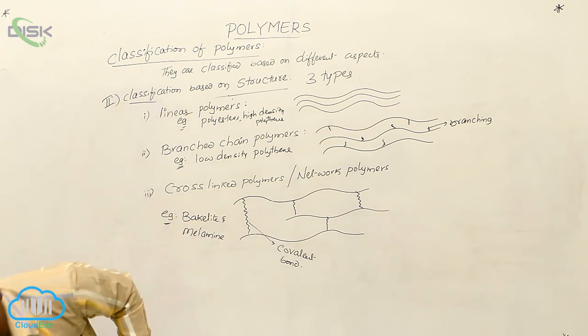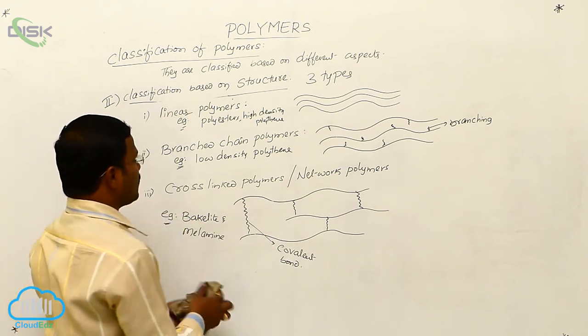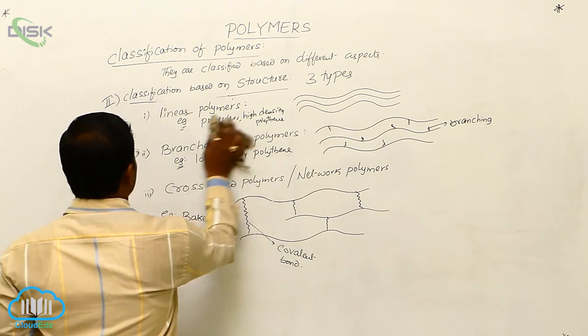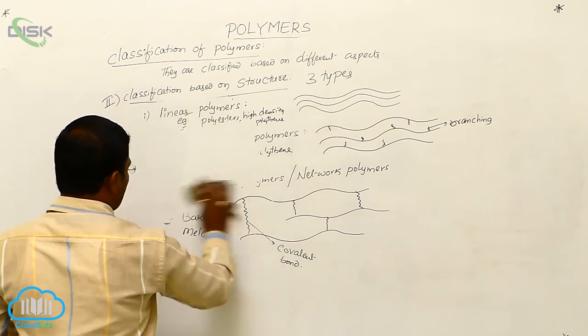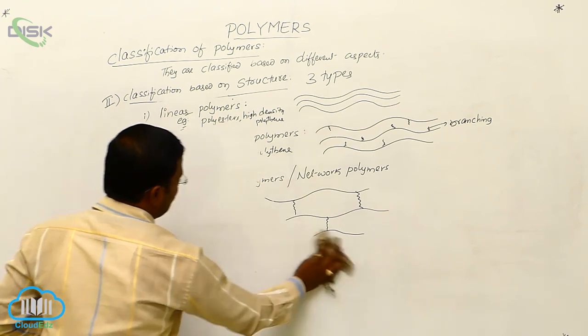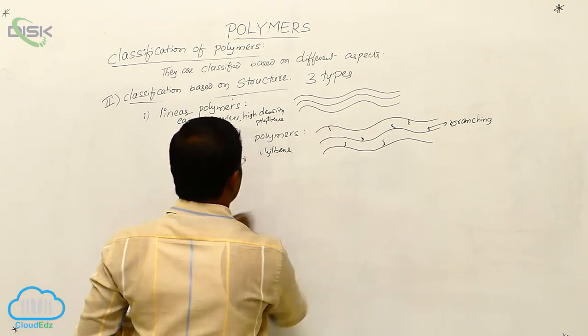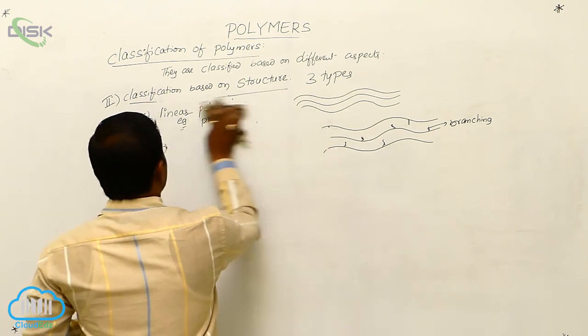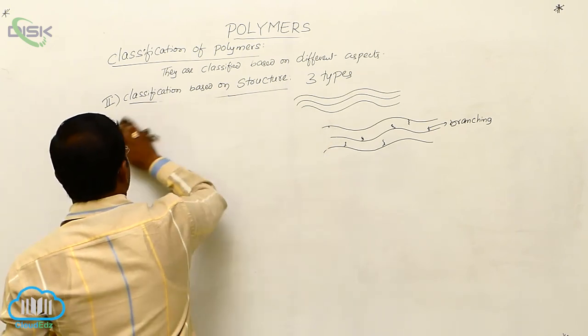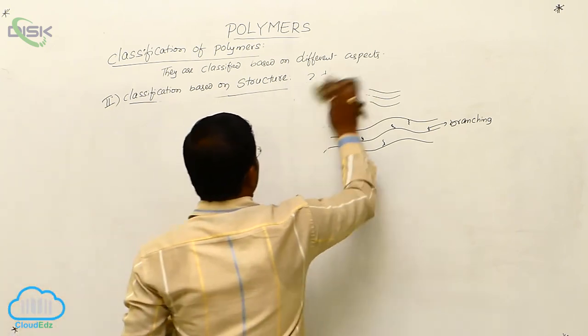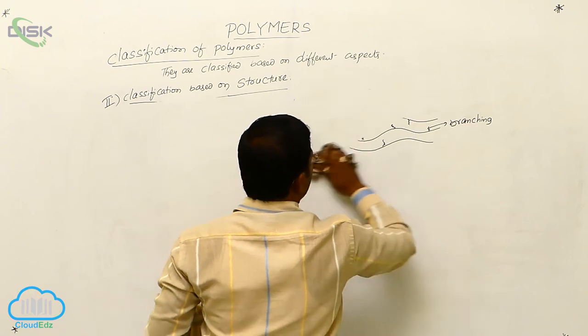This is one more type of classification: the classification of polymers based on structure. We can extend our classification of polymers further.